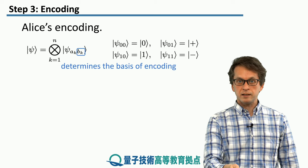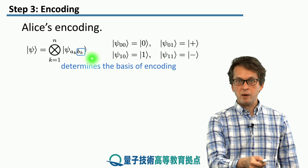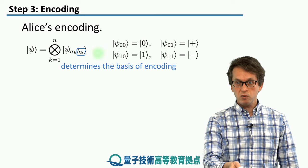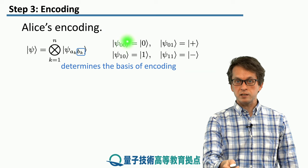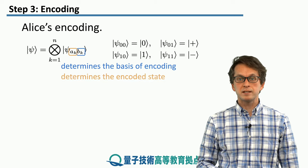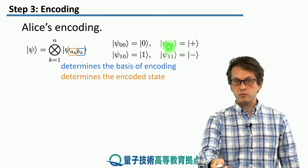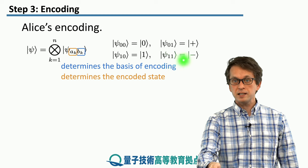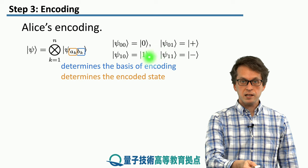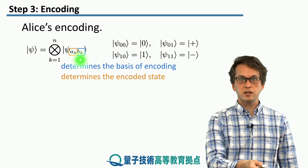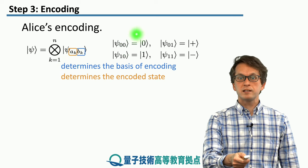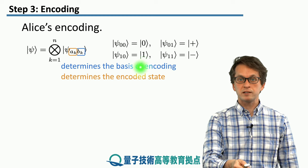We can see that the bit from string B determines the basis of Alice's encoding. If BK is 0, she prepares the qubit in the Z basis. If BK is 1, she prepares the qubits in the X basis. AK then chooses which state from that basis she prepares: if AK is 0, she prepares the +1 eigenstate; if it's 1, she prepares the −1 eigenstate.